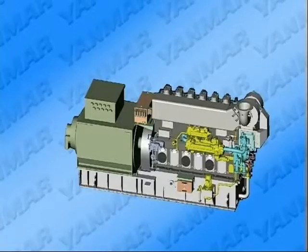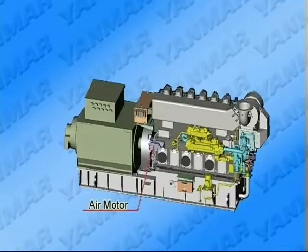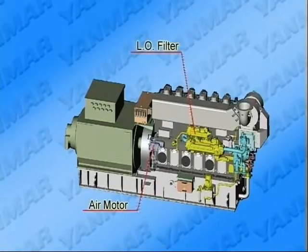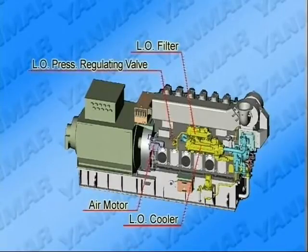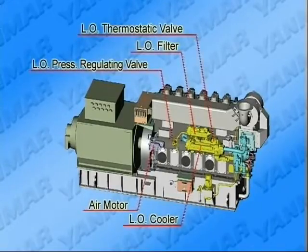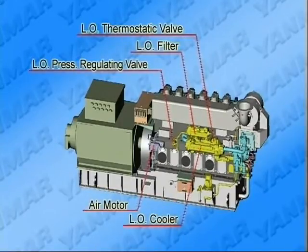When viewed from the anti-operation side — the anti-flywheel side — the air motor, automatic backwashing strainer of lube oil, lube oil cooler, lube oil thermostatic valve, and lube oil pump, etc., are laid out as shown here. Familiarize yourself with the location of each device to handle them promptly when conducting maintenance.